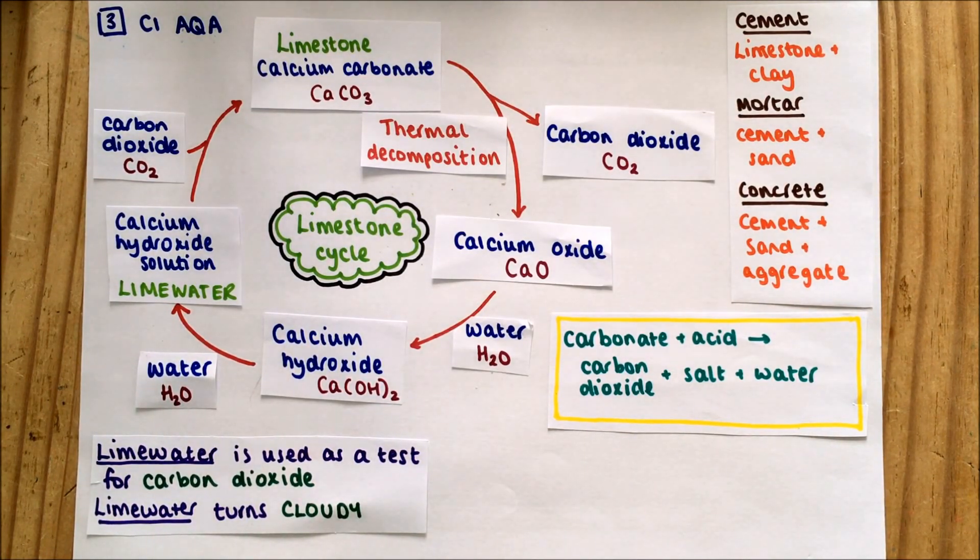These are three key products made using limestone. So where do we get limestone from? We quarry it out of the ground, and there's fors and againsts - negatives and positives of that process that you could well be asked in a six mark question.